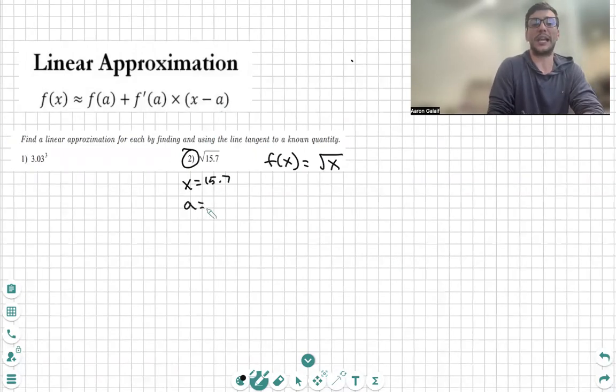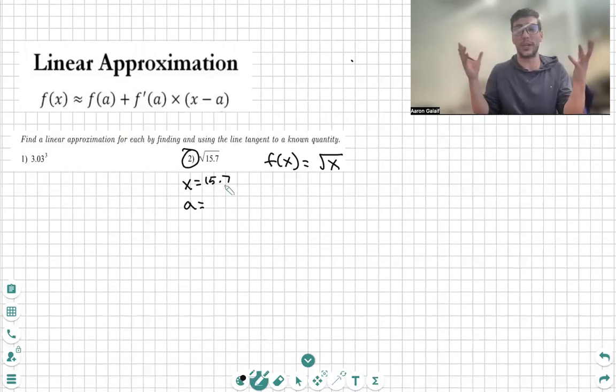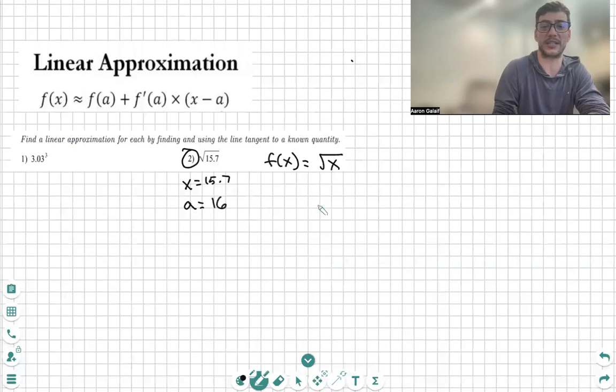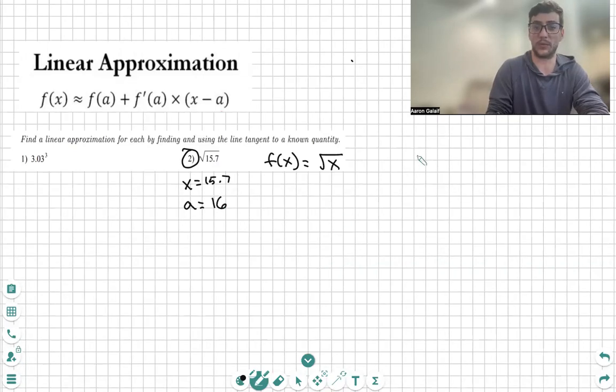The value of a is the closest integer to that number. The closest integer to 15.7, there are two we can choose: 15 or 16. However, one is much closer to 15.7 than the other. Which one is that? Obviously, the 16. So we will say a is 16. Then we're just going to go through our formula.